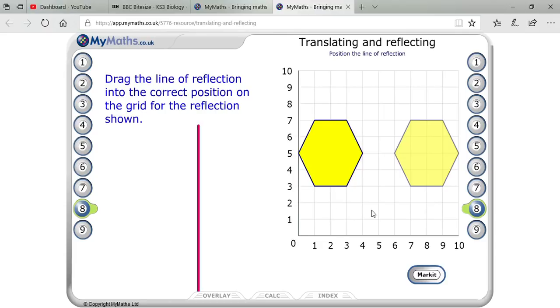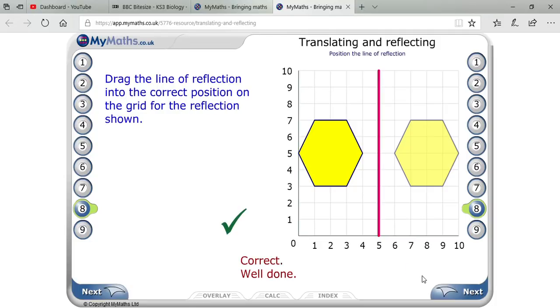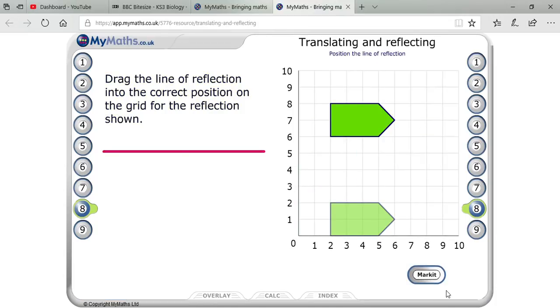You are seeing that they are two units apart from each other. That means you have to place your line in between, one unit apart. And when you mark it, yes, that's right. So basically, what you have to do is see the figure and place the line accordingly.